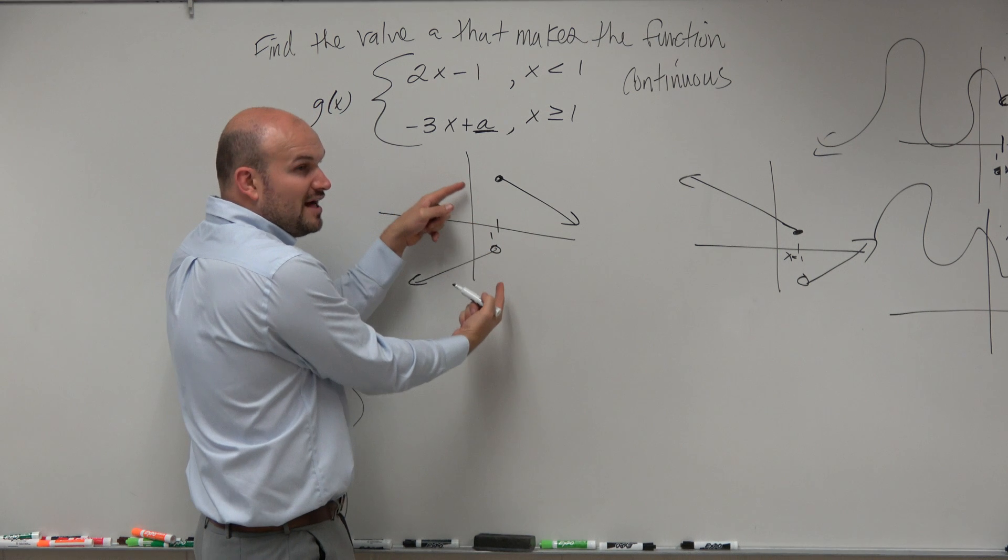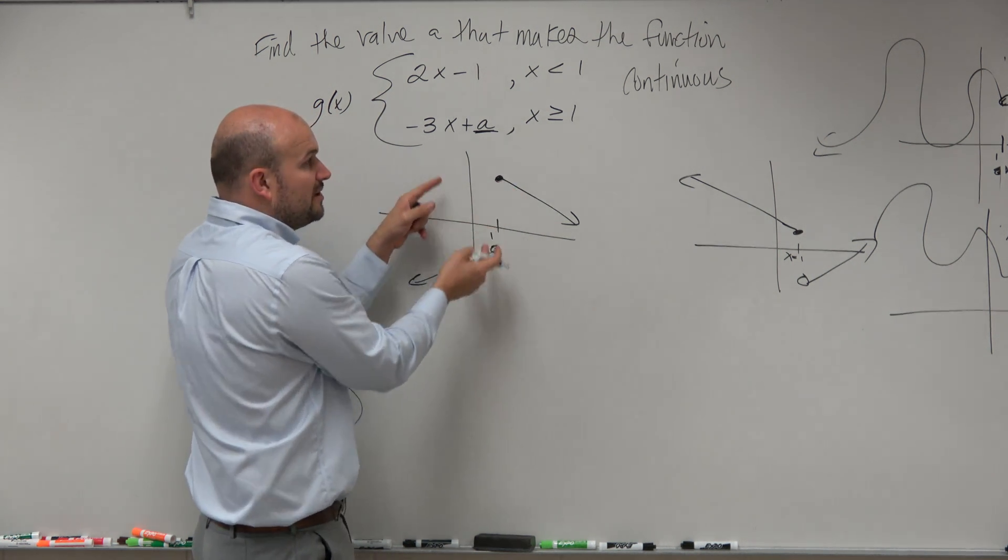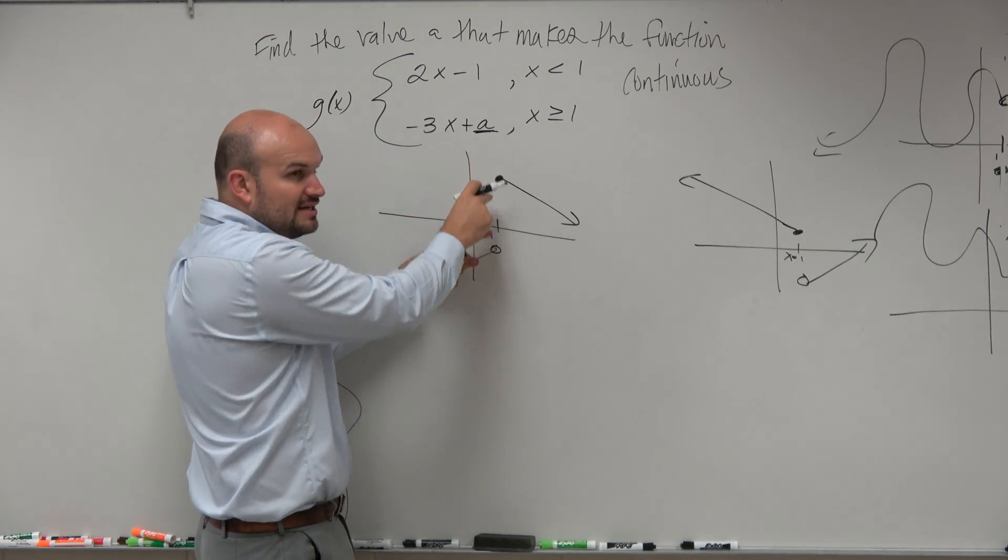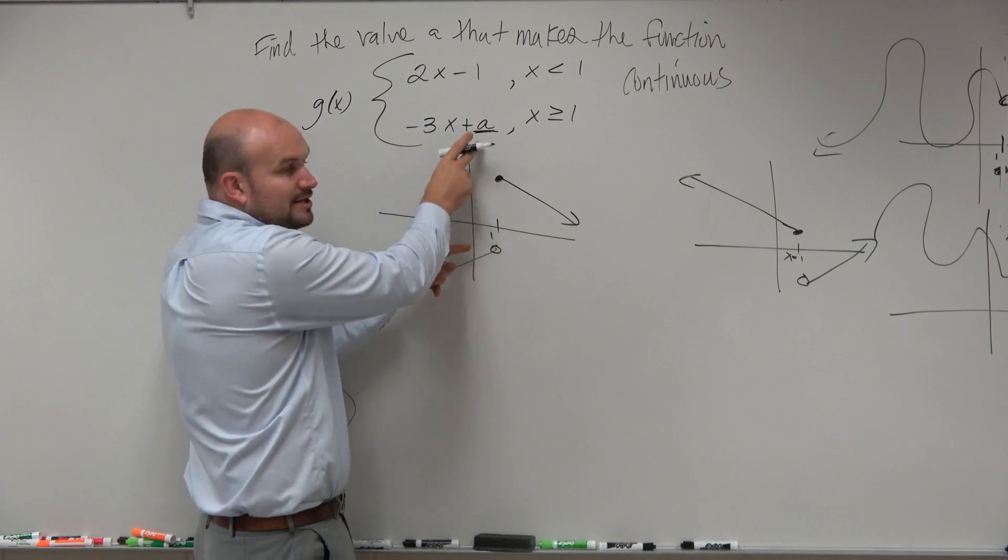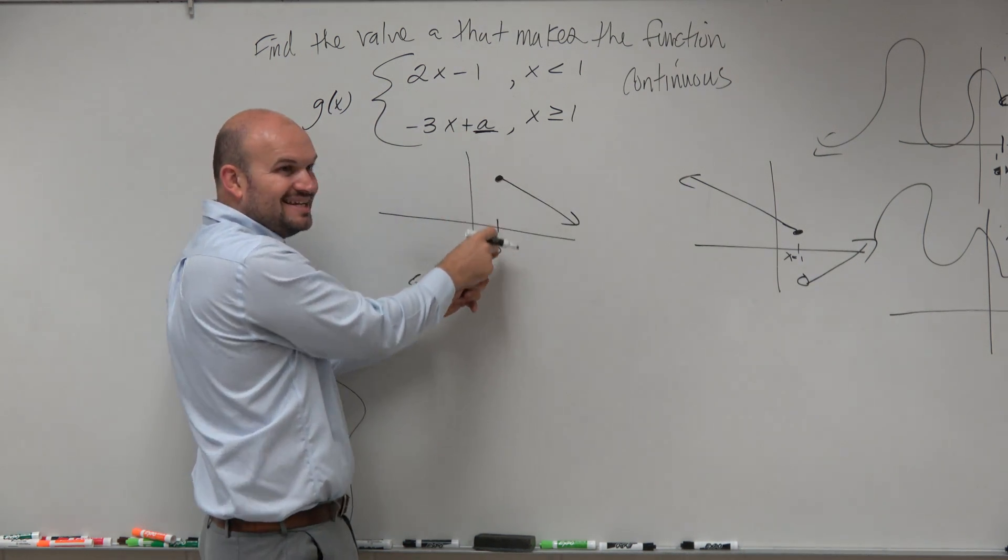Right now, for whatever value of a, they could be discontinuous. But if we can find the right a, we can marry them together, right? And that's what we want to do. We want to find the right a that connects them.